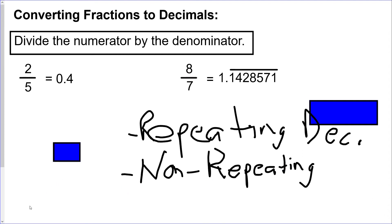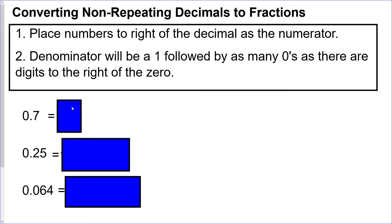Quick review of non-repeating decimals to fractions is that you place the numbers to the right of the decimal as the numerator. So in this case that's the 7, and the denominator is a 1 followed by as many zeros as there are digits to the right of the zero. In this case would be 7 over 10 because there's one digit to the right of the decimal place.